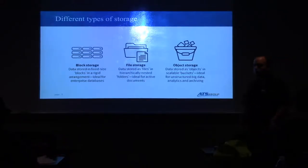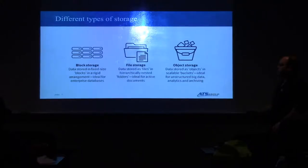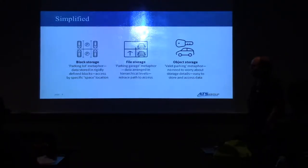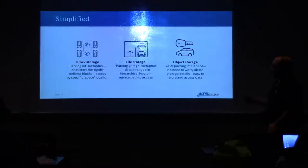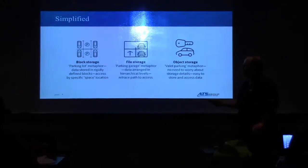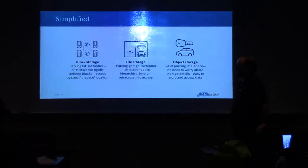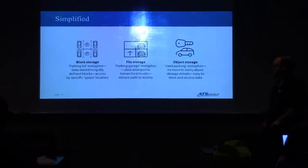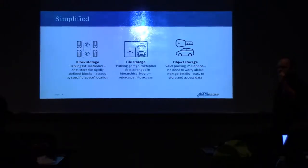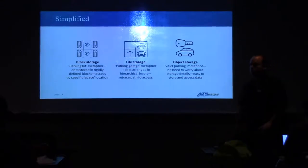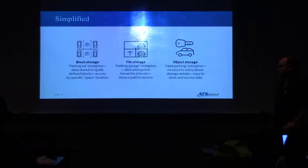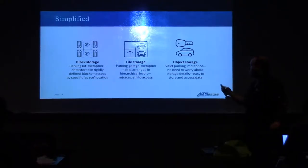Object storage is really big in the archiving and backup space — that's where a lot of enterprise folks are bridging their needs with this new technology. A simplified view of the difference between the three types is a parking analogy: block storage is the parking lot, where data is stored rigidly in defined blocks and you access a specific space location. File storage is the parking garage, where things are arranged in hierarchical levels. Object storage is like valet parking — you don't need to know where it is, where it's been, or where it's going. You just need that stub, and you'll get your car.